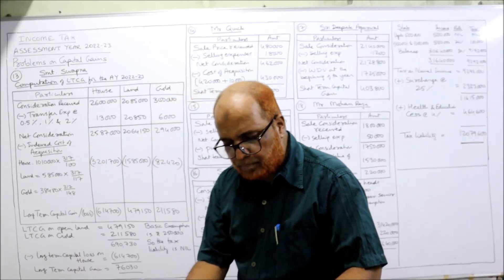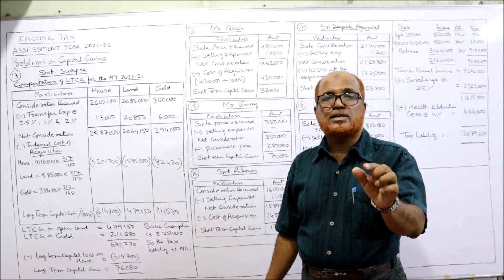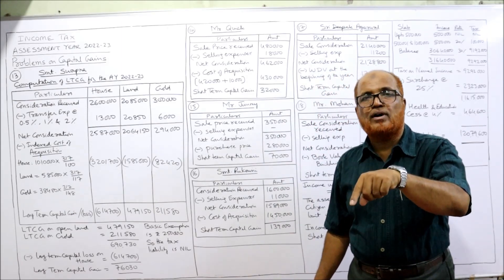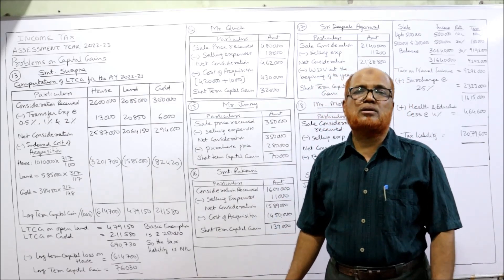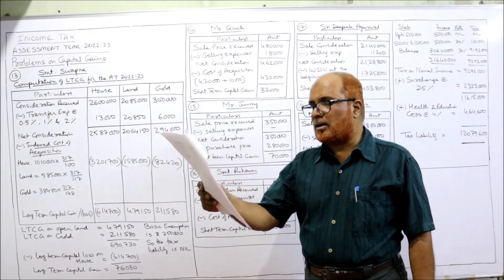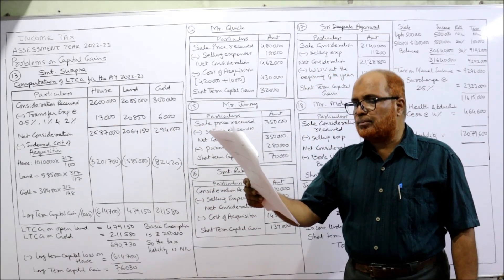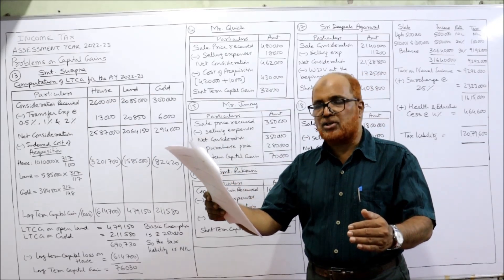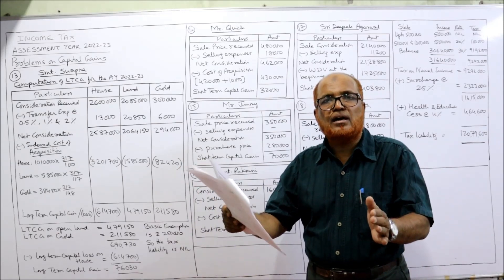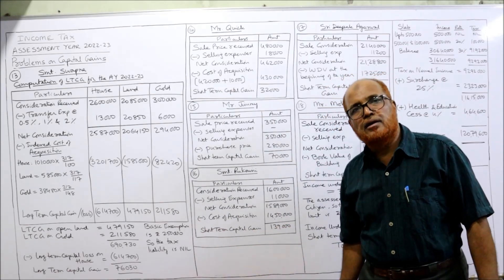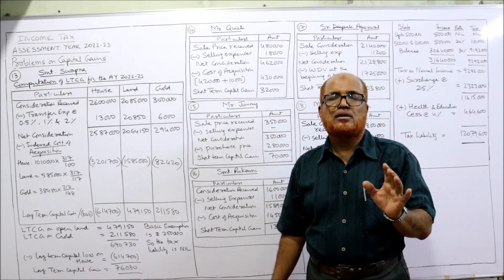Now the 15th problem. Mr. Jimmy purchased equity shares listed of a limited company. For listed equity shares, if held for more than 1 year it will be long-term capital gain; if sold within 1 year it is short-term capital gain. Mr. Jimmy purchased the equity shares on 14th December 2020 and sold within 3-4 months — that means within 1 year — so the gain arising will be short-term capital gain.